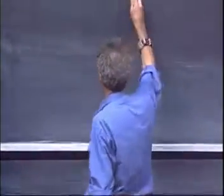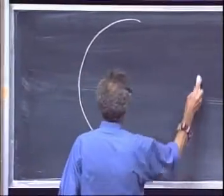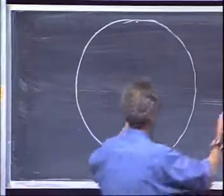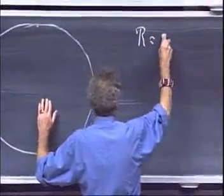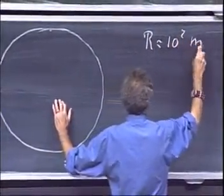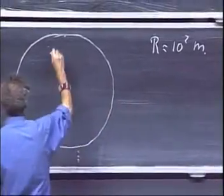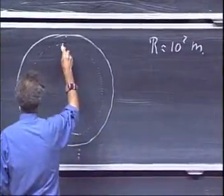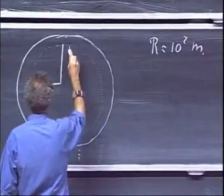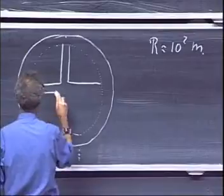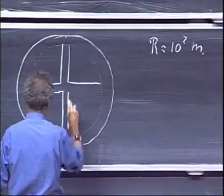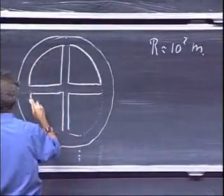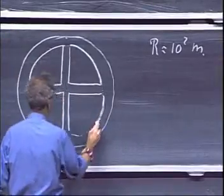So let this be your space station. It's a big wheel, a radius of about 100 meters. And we'll make it very fancy for you. We'll make some corridors around, like here. We'll make it a very interesting space station, like so, and like so.